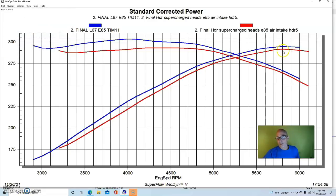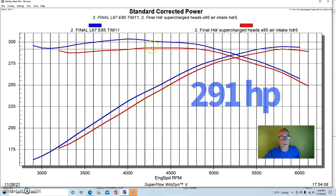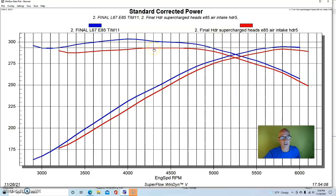The L32 made less power, 291 horsepower, and only 293 foot-pounds. So, it was down as much as 10 horsepower and over 10 foot-pounds of torque.